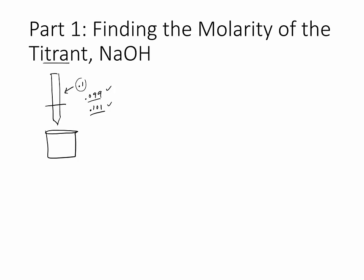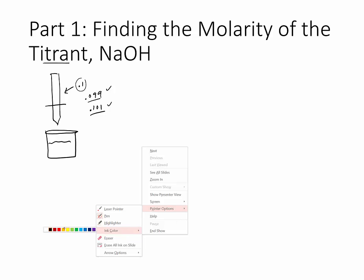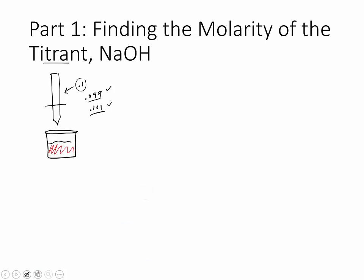We need to know this exact concentration to make our other numbers more accurate. So if you titrate this all the way to the endpoint — I'm looking for a pink color; the best I could do is red — once it turns pink you stop the titration. At the endpoint, the moles of KHP are equal to the moles of OH⁻. We're interested in the molarity of OH⁻, so we substitute: moles equals molarity times volume.